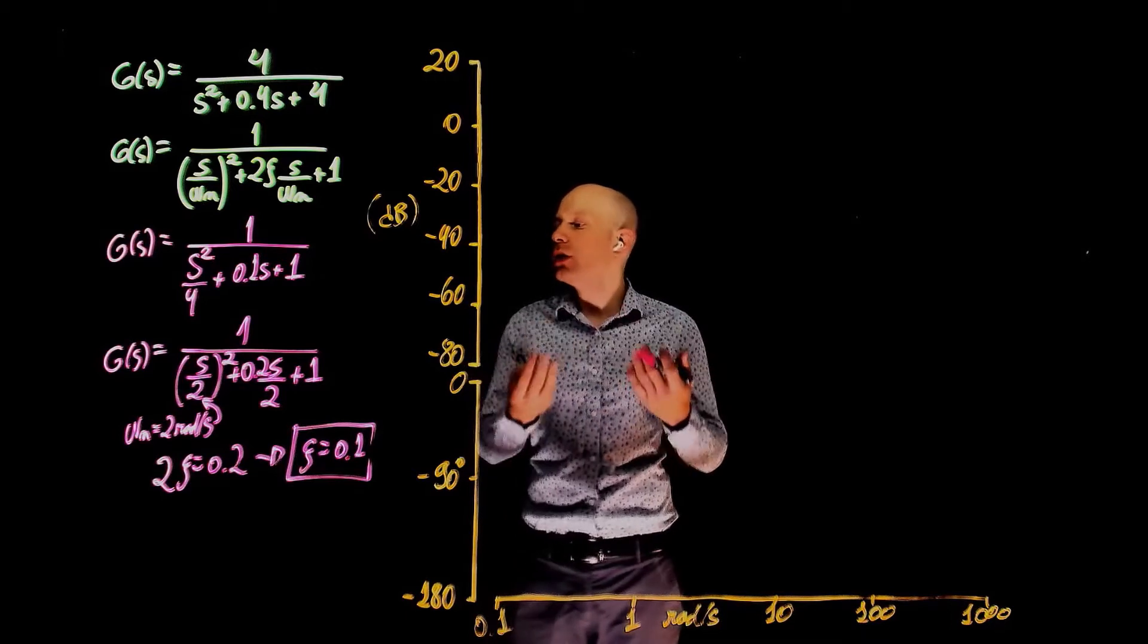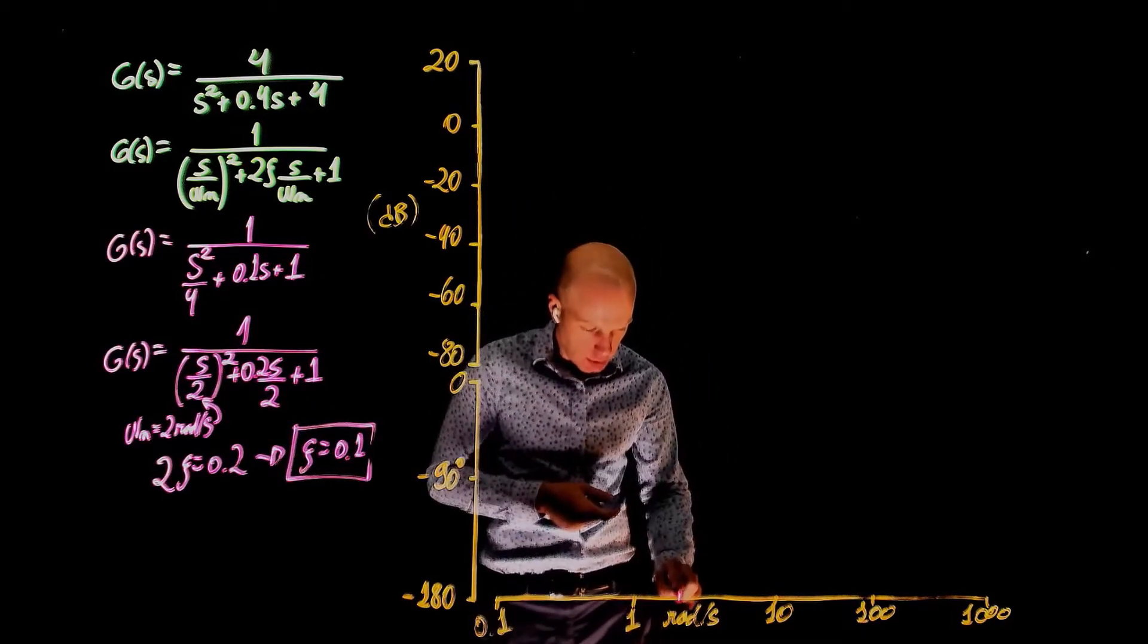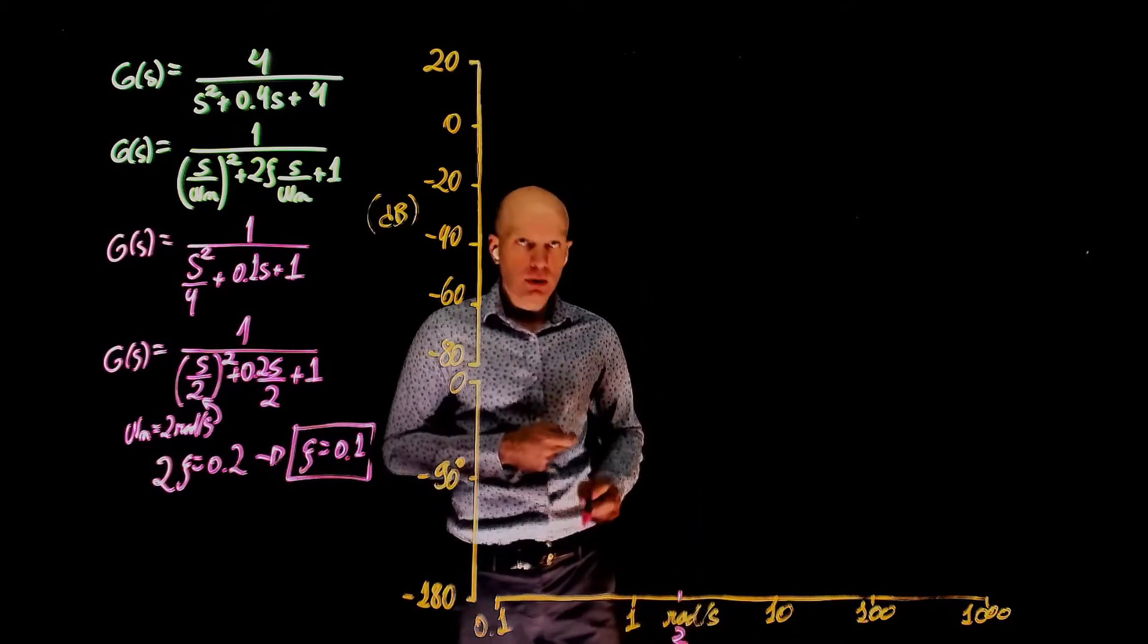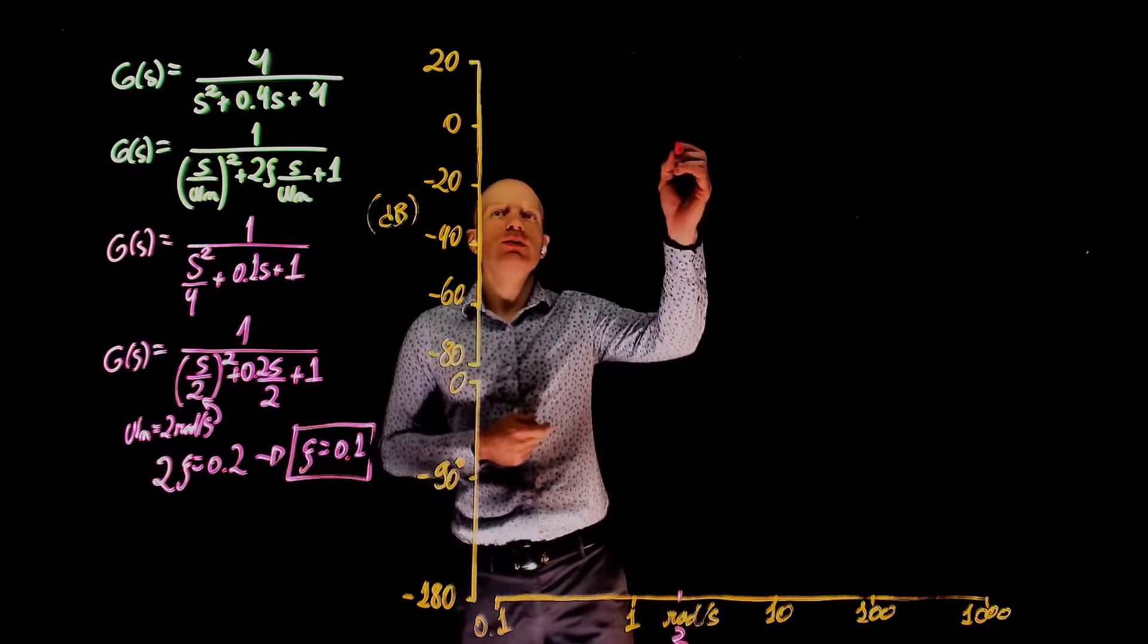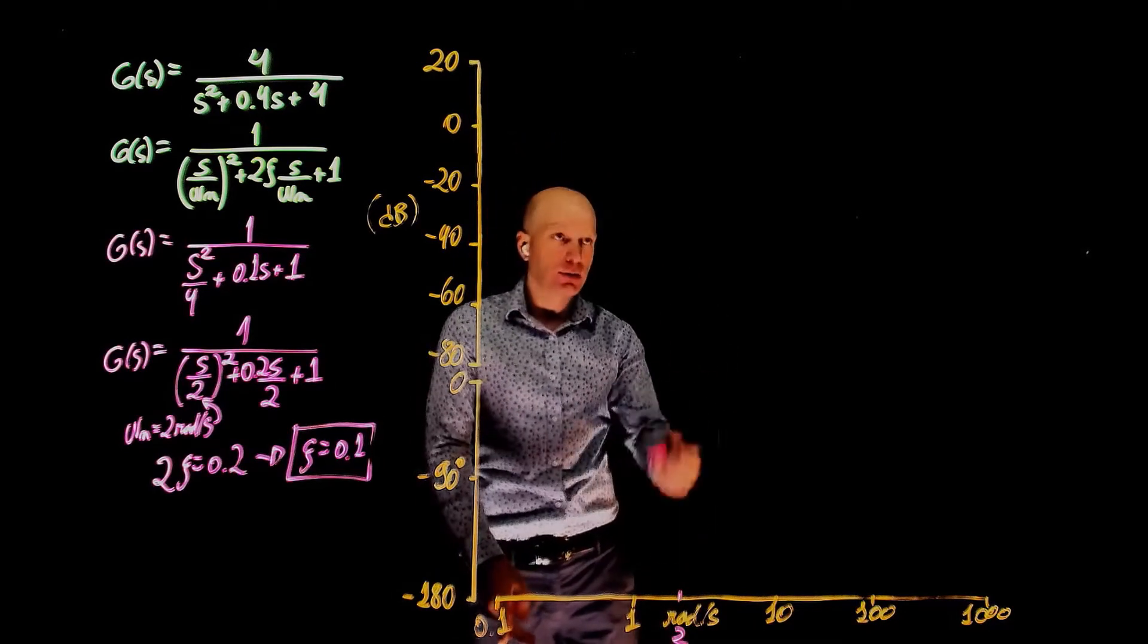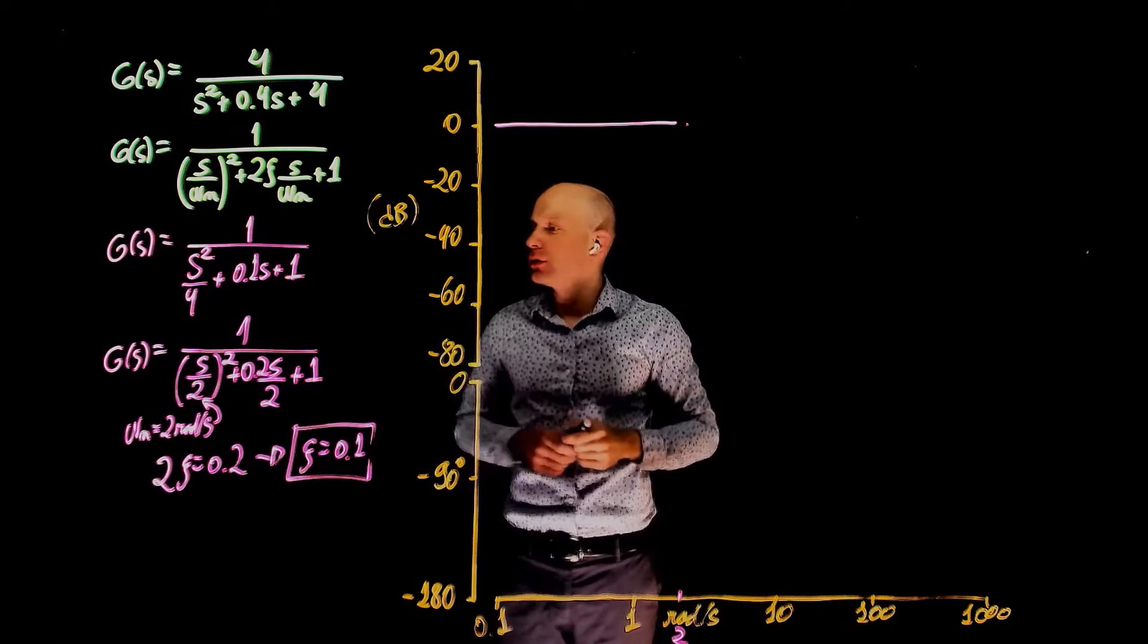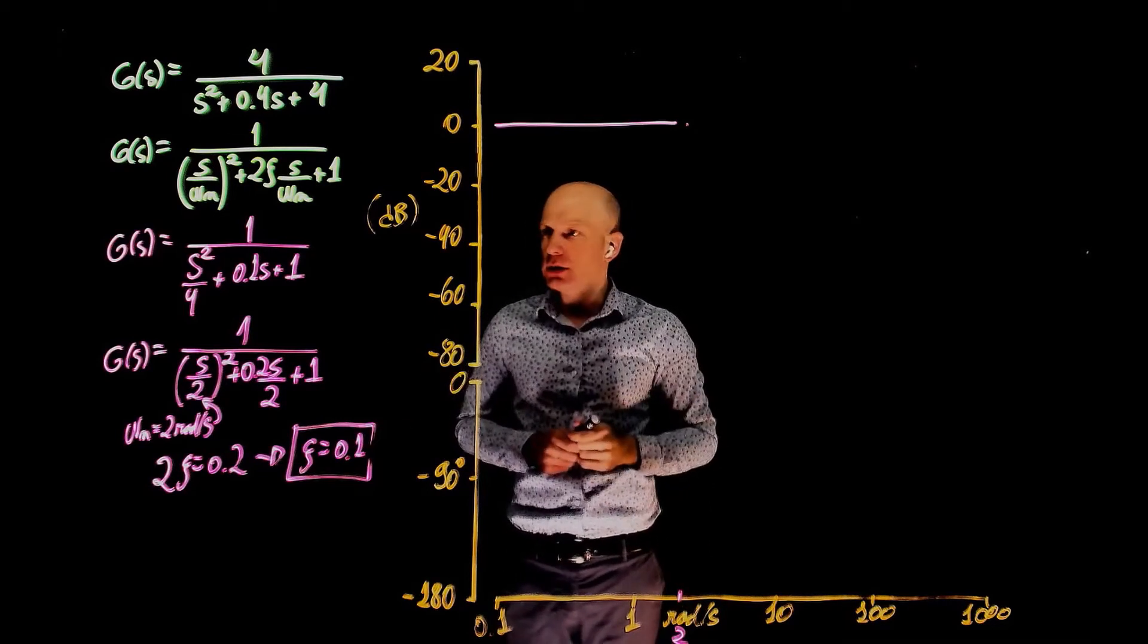In this case, you only have one cutoff frequency, that is 2 radians per second, which should be around here. So from 0.1 up to 2, we should be at 0 decibels. Now we reached our first cutoff frequency, in fact the only cutoff frequency for this system, 2 radians per second.